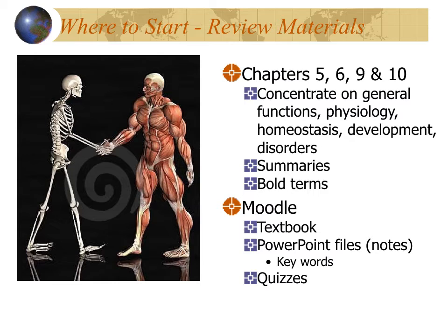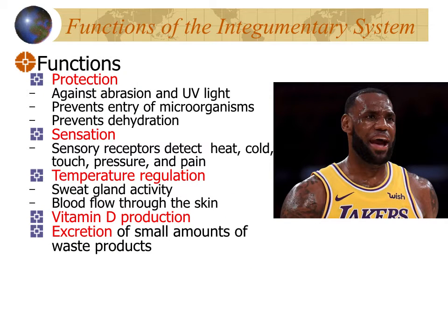Plan your time, take breaks, work in short bits — that will all help, and good luck. This exam covers chapters 5, 6, 9, and 10, with probably the greatest emphasis on 5, 6, and 10, with a little bit of 9 and 11. Concentrate on general functions of organ systems, their physiology, any link to homeostasis, how they develop, and disorders. Look over summaries, bold terms, textbook, PowerPoint presentations, keyword lists, and old quizzes.